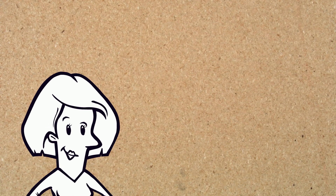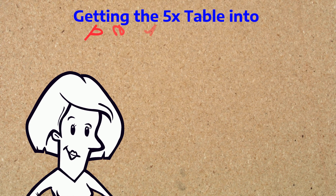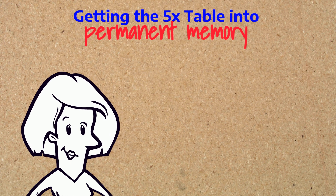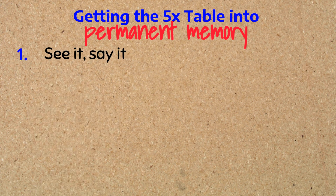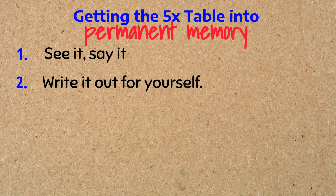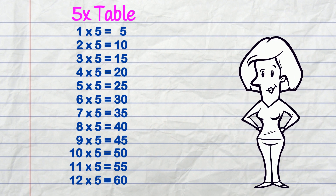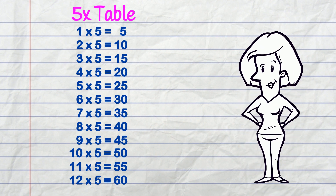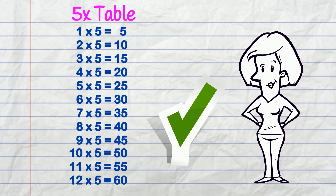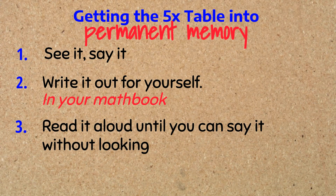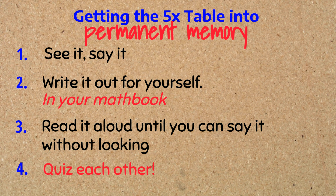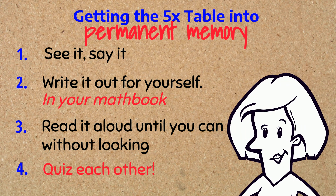It's a pattern we can easily spot and it helps us get problems right using the 5x table! When it comes to getting the 5x table into our permanent memory, I hope you remember our method. First, we see it and say it! Next, you write it out for yourself in your math book. Your teacher will check it to make sure you didn't make any mistakes. Then, read it aloud until you can say it without looking. Finally, quiz each other on it — try to get them right AND be fast!